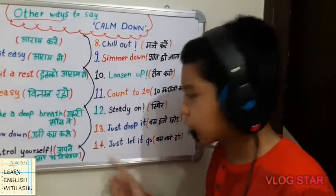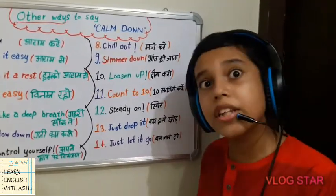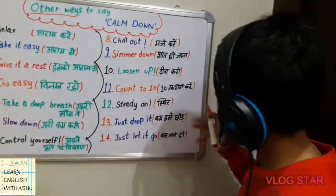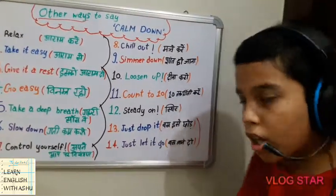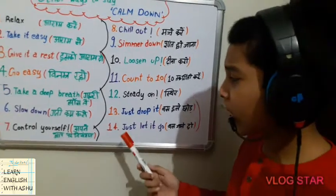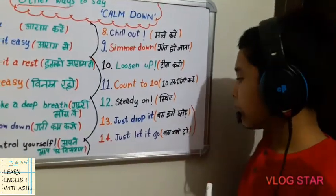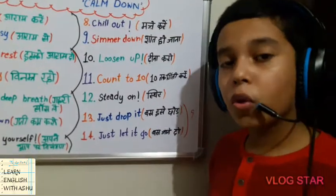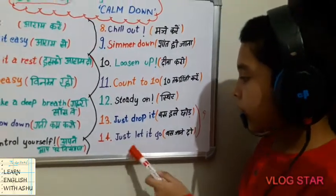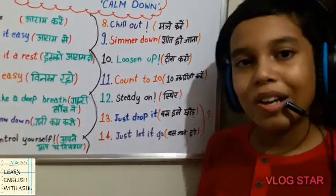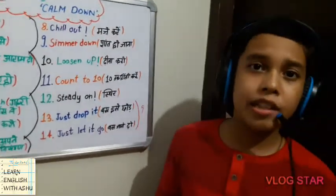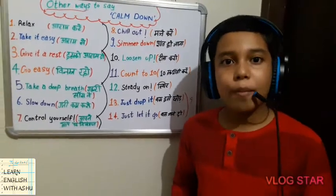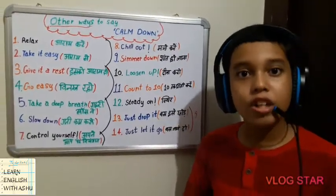The 14th and last phrase is 'just let it go.' These two phrases — 'just drop it' and 'just let it go' — are very similar. The Hindi meaning is 'jaane do' — just let it pass. If you have any doubt about this lesson, comment without hesitation. Please subscribe to my YouTube channel 'Learn English with Ashu,' like this video, share it, and subscribe again. See you in the next video!